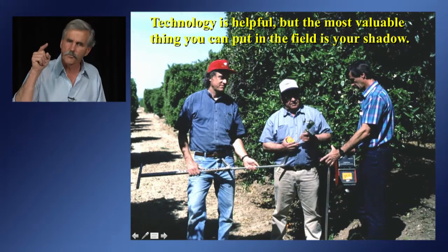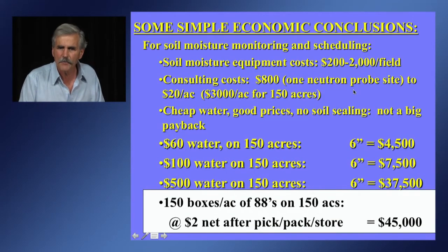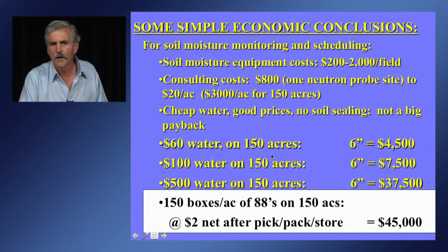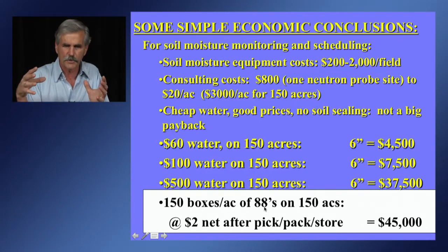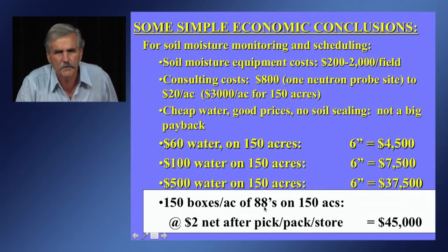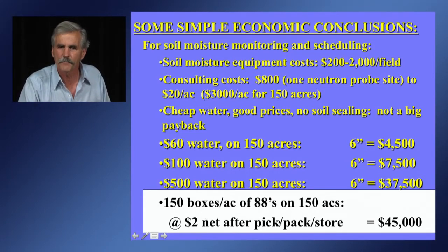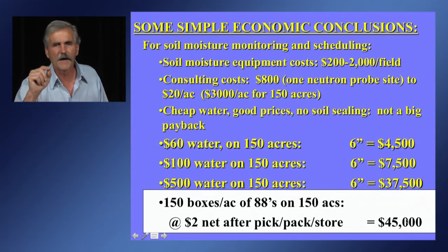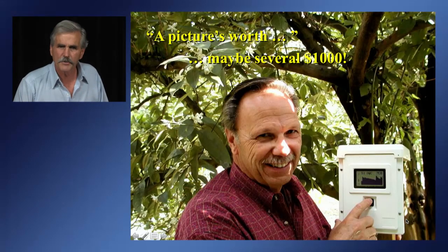The website address for that particular spreadsheet scheduler is available. The most helpful thing you can do is put your shadow in the field. Economically speaking: saving six inches at $60 per acre-foot is $4,500 over 150 acres. But if you can produce an extra 150 boxes per acre of 88-size pack-out in a citrus orchard — which we've done with improved irrigation monitoring to recognize water-deficient status — at $2 net after pick and pack, that's $45,000 extra for that particular field. A picture may be worth several thousand dollars.